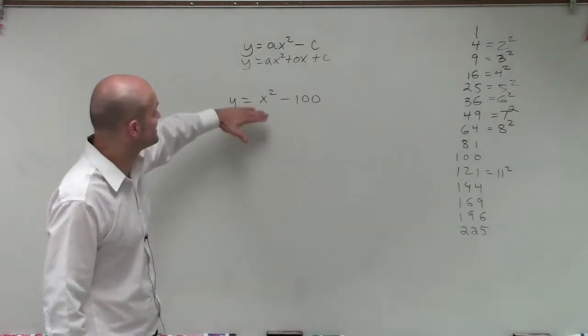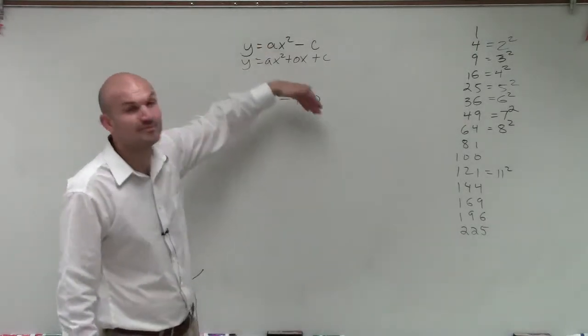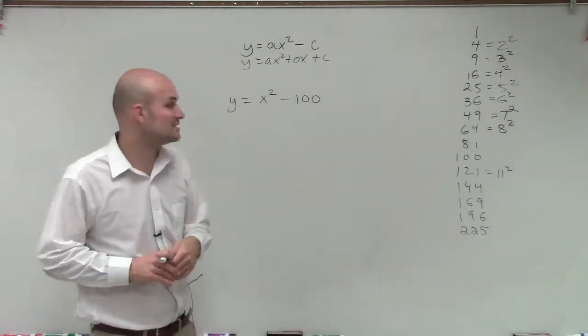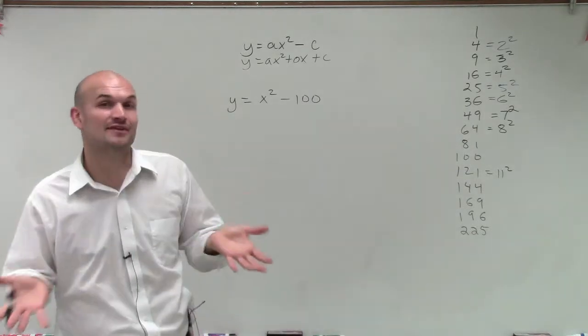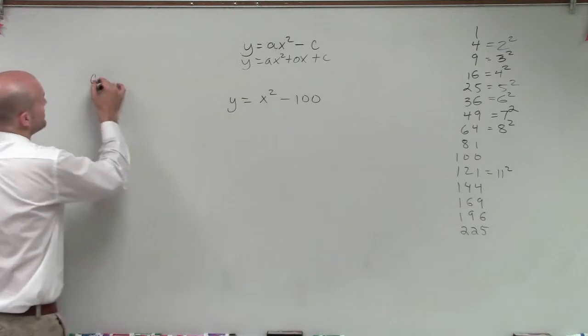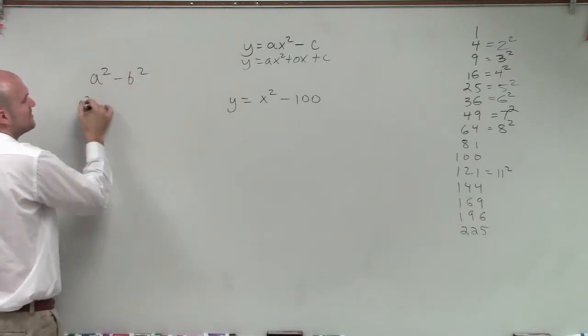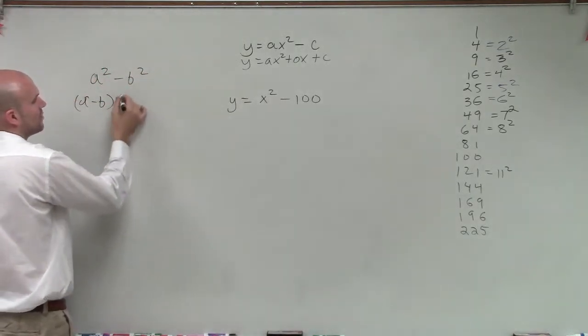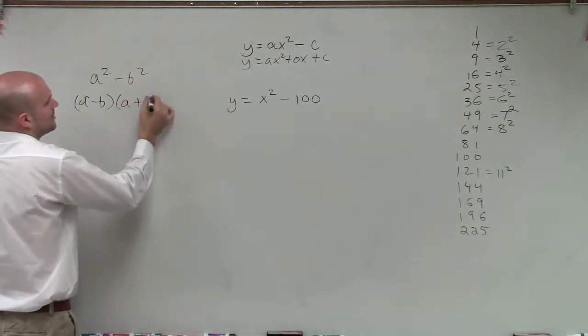OK, so to solve this one, I see that it's in the form of y = ax² - c. So I'm going to apply the difference of two squares method. I'm going to make this video very quick, because all I need to know is as long as I can have this in the form of a² - b², I can factor it into the form of (a - b)(a + b).